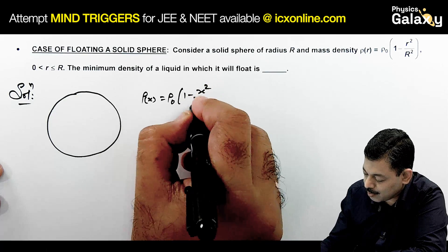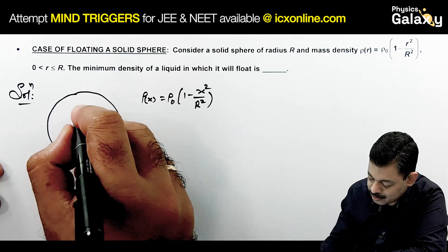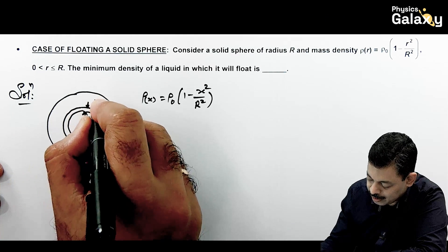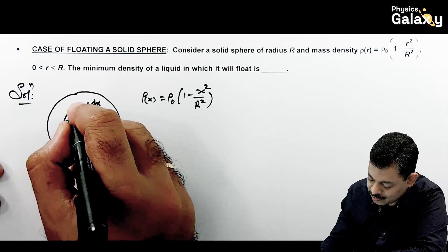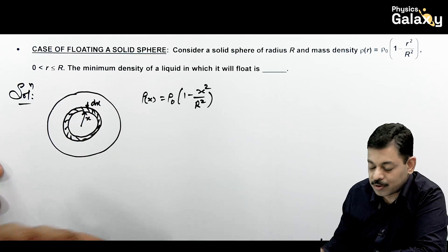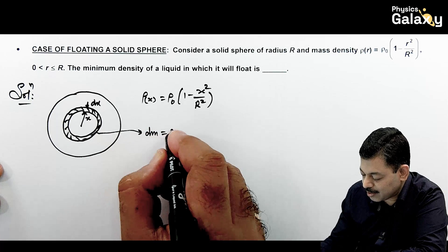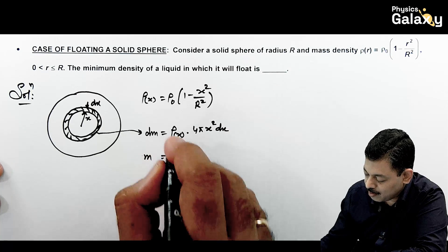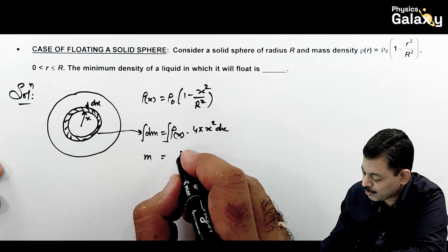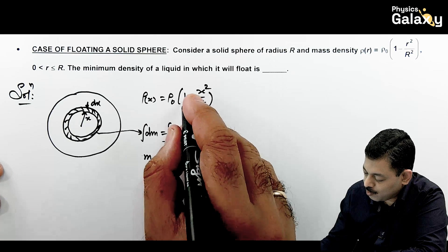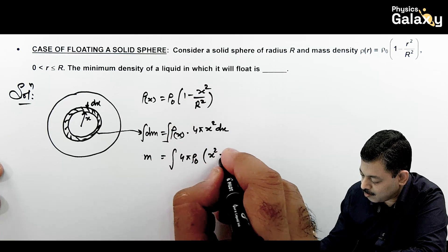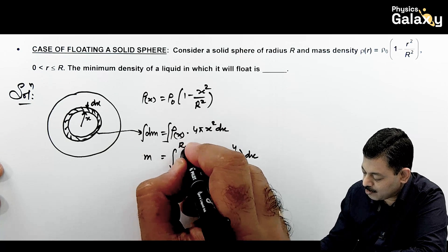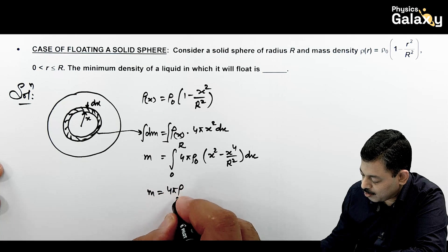Since density changes with distance, ρ(x) = ρ₀(1 - x²/R²). We consider a spherical shell at distance x from center of width dx. The mass of this elemental shell dm = ρ(x) · 4πx²dx. Total mass is the integration of this, which is ∫4π·ρ₀·(x² - x⁴/R²)dx with limits from 0 to R.